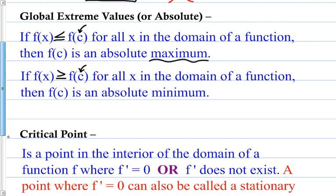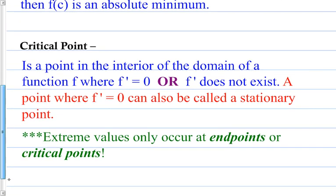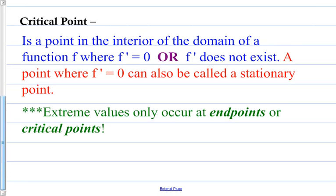Critical points: a critical point is a point in the interior of the domain of a function f where f prime equals 0 — meaning the slope is 0 — or f prime does not exist. So a critical point occurs if the derivative does not exist or if the derivative equals 0. In cases where only the derivative equals 0, these points can also be called stationary. Critical points and stationary points are not necessarily the same thing, because critical points exist where the derivative does not exist, while stationary points only exist where the derivative equals 0.